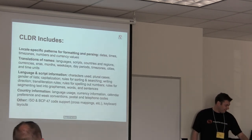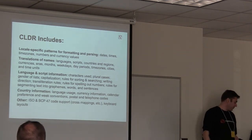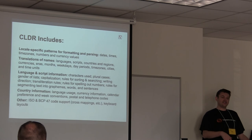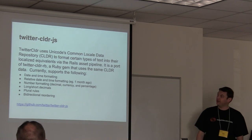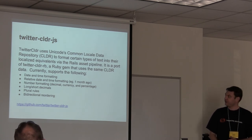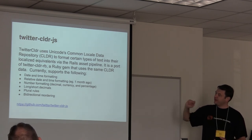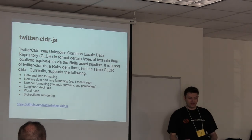The CLDR includes translations, script information, country information, quotes, and a lot more. Twitter has a CLDR JS library where they took an extract of all that data and generated JavaScript code to do all this formatting. It was originally a Ruby gem, but they created a JavaScript version. I was able to take just the script files off GitHub and load them directly into my app. They do date and time formatting, relative date and time formatting like 'one minute ago,' and number formatting in long, short, decimal, and currency formats.